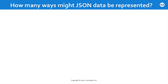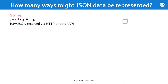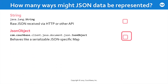It's important to look at how many ways JSON data might be represented within an application. Of course, it could be represented as a simple string — a raw Java string. This is commonly the format you're going to receive if JSON is posted from a browser or other API. Within Couchbase itself, the Couchbase API has the notion of a JSON object, which takes that string and reformats it in what you could think of as a JSON-specific map to make it easier to manipulate in code.